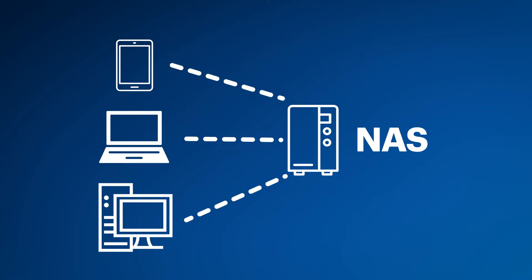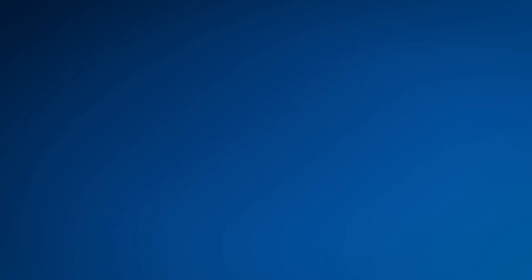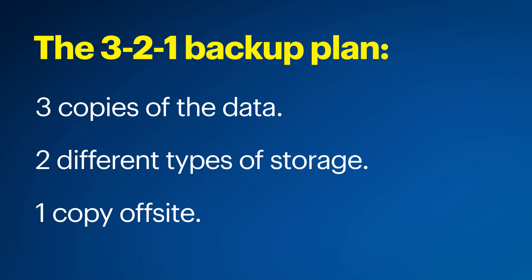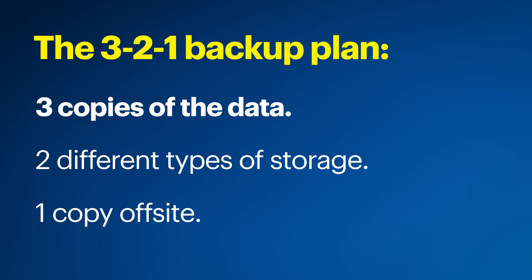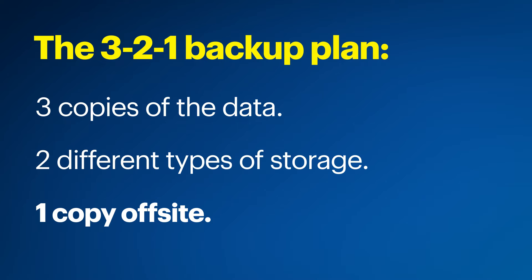Having a NAS on your network allows you to have centralized storage so multiple devices can access information saved on it. Depending on the NAS, you may even be able to set it up for external access and the ability to access your files away from your home. Backing up to a NAS is also an essential step in a 3-2-1 backup plan. The 3-2-1 backup plan allows you to have three copies of your data and store the copies on at least two different types of storage. One of the copies would also need to be stored off-site.